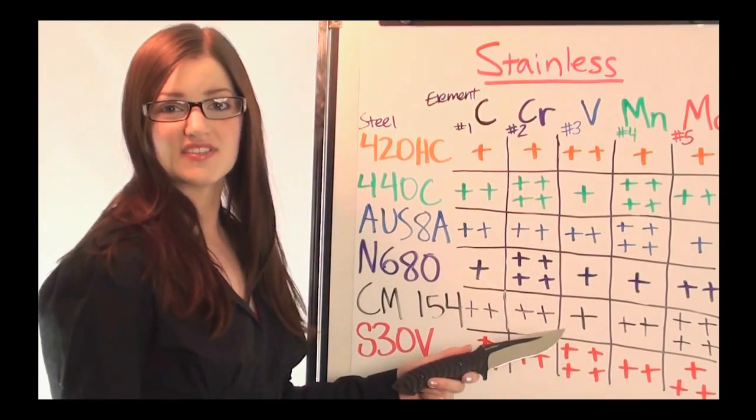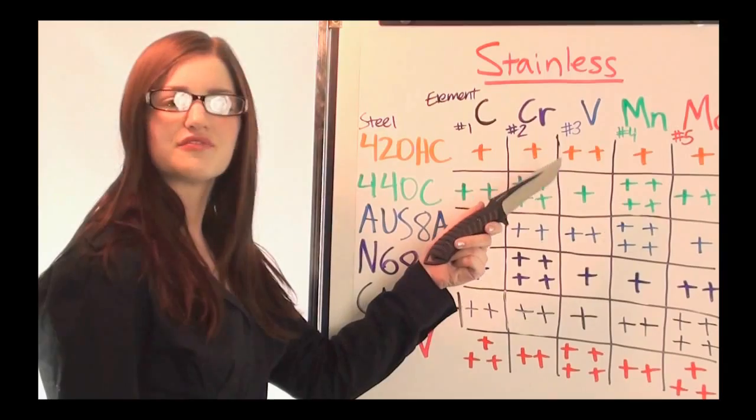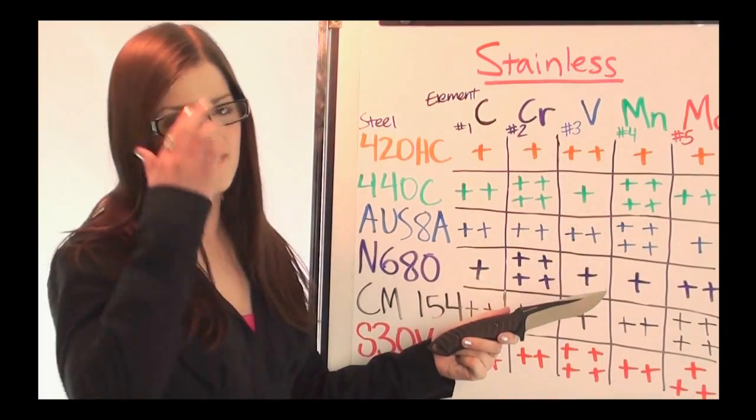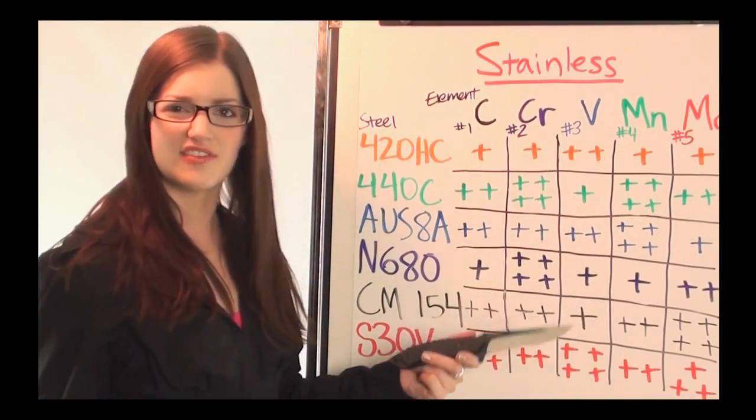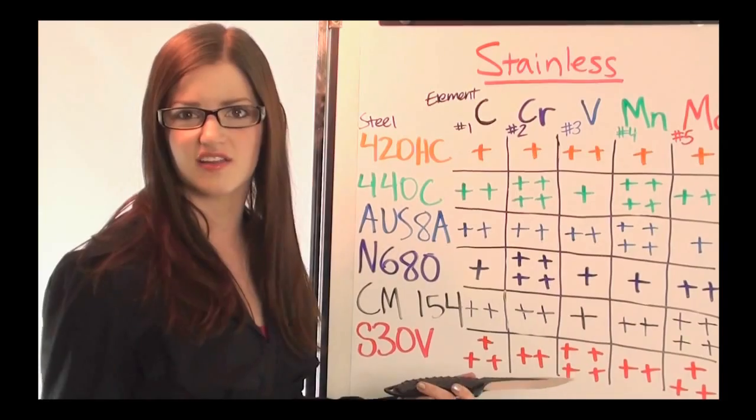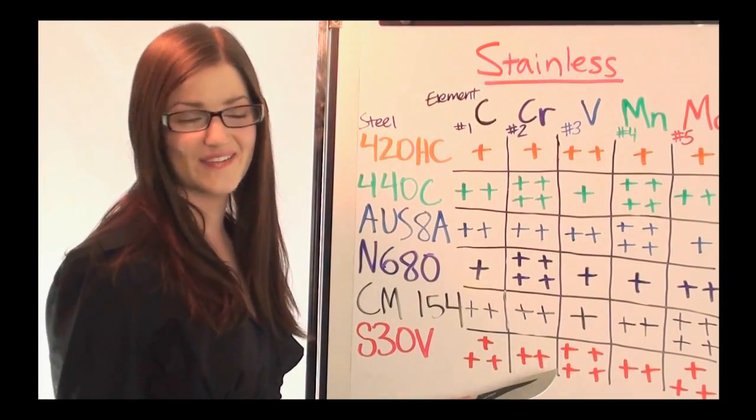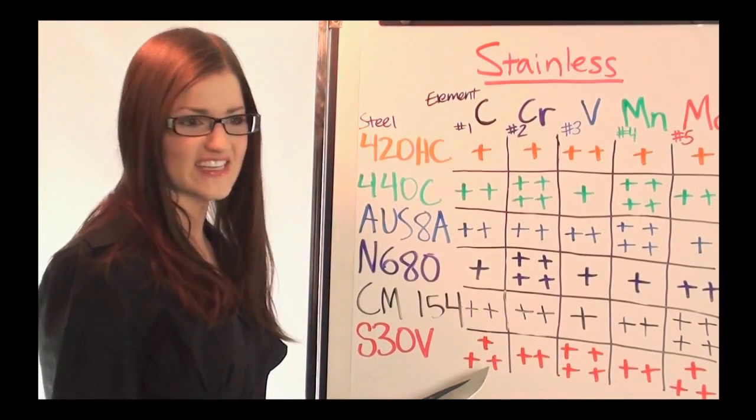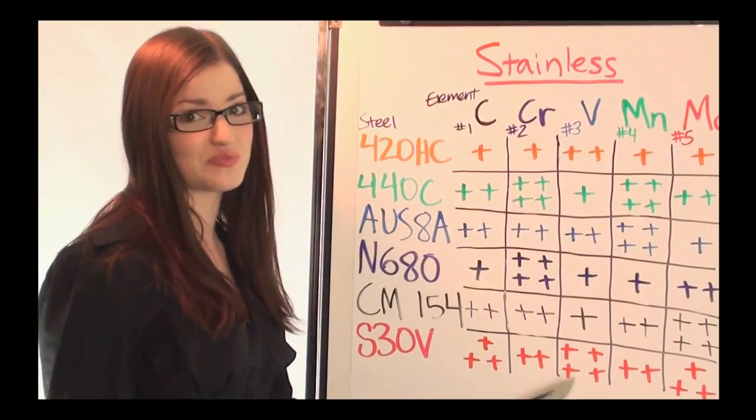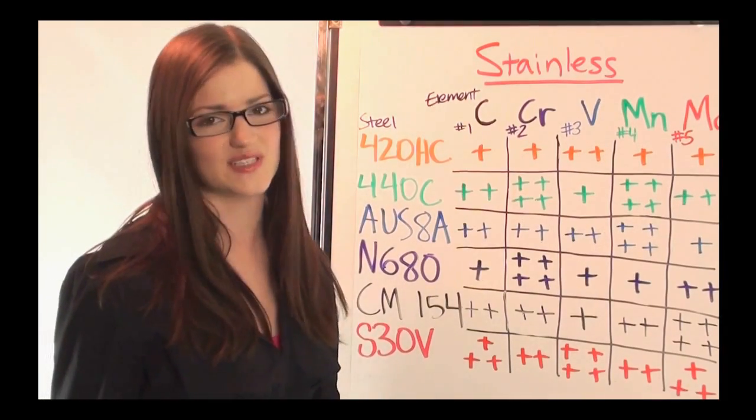C154 is another one of those steels that's going to compare well to 440C and AUS8A. It's in a lot of pocket knives. Benchmade uses it in a lot of their blades. And if I had a little more dough, I would have more knives with this S30V because you can see it's just got loads of pluses across the board, but it's also more expensive.